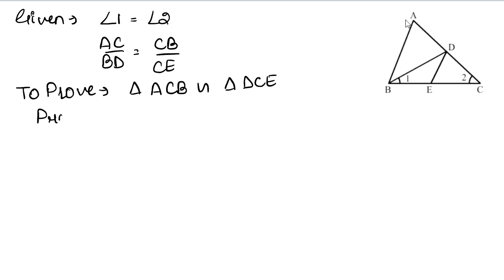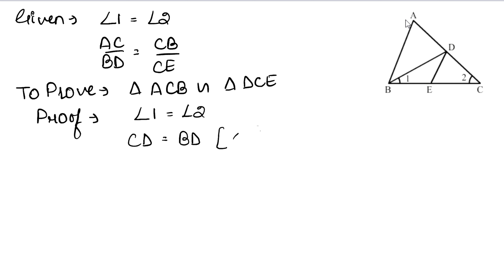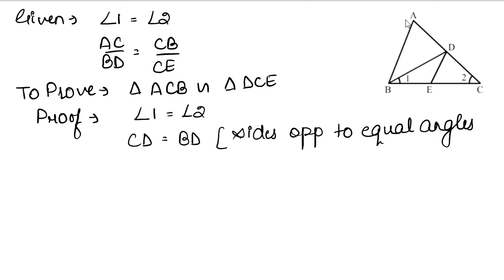Proof शुरू करते हैं. हमें पता है angle 1, angle 2 के equal है. जब भी ये angles आपस में equal होते हैं, तो उनकी opposite sides equal होती हैं. Angle 1 की opposite side है CD, और angle 2 की opposite side है BD. तो CD equals BD. Sides opposite to equal angles are also equal.